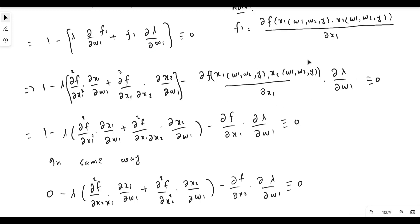Applying the product rule: f1 as it is times the derivative of lambda with respect to w1, plus lambda times the derivative of the function with respect to w1. Simplifying: 1 as it is minus lambda times ∂²f/∂x1² times ∂x1/∂w1, plus the cross partial ∂²f/∂x1∂x2 times ∂x2/∂w1, minus f1 times ∂λ/∂w1 equals zero.